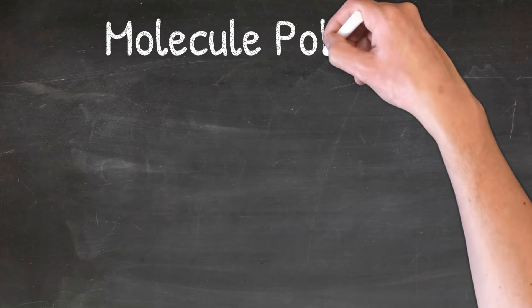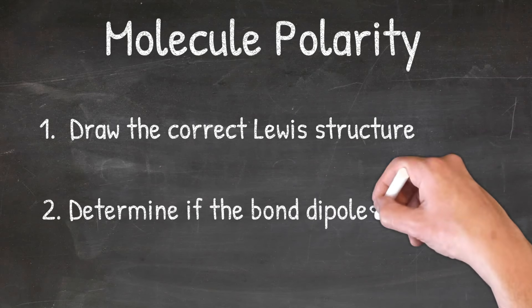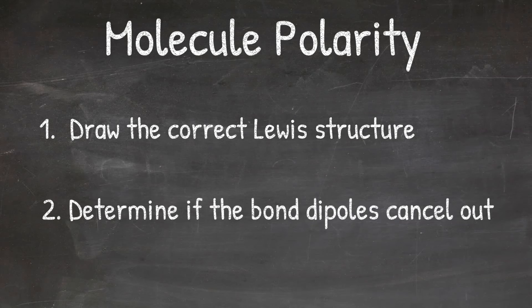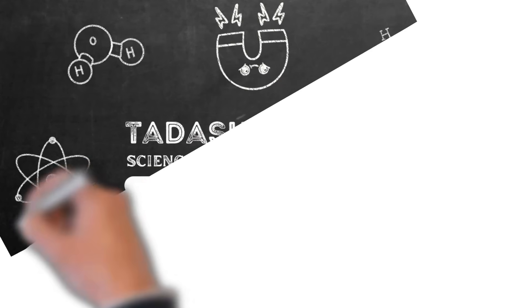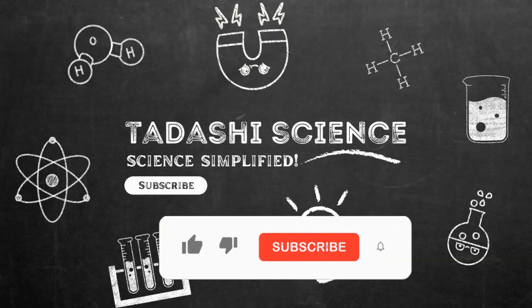So molecule polarity comes down to drawing the correct Lewis structure and then determining whether or not the bond dipoles cancel out. This is a very important concept in chemistry, as it helps us better understand various physical and chemical properties that molecules possess. If you found this video helpful, here are a couple more videos you should check out that will help make science simple.